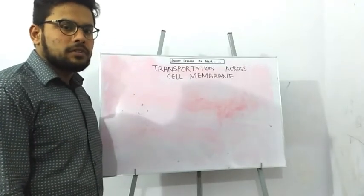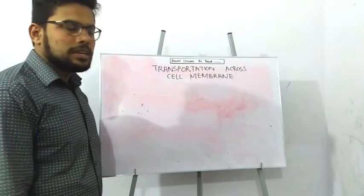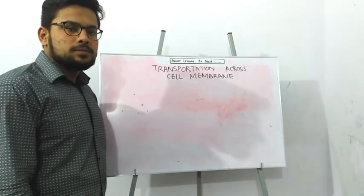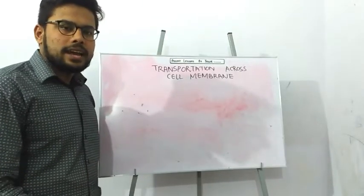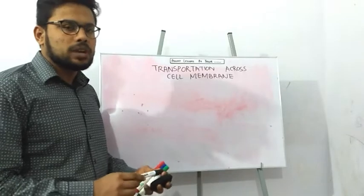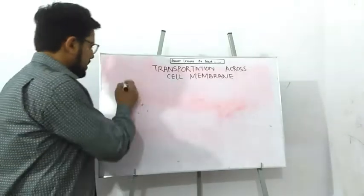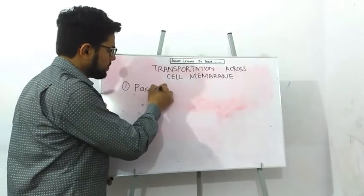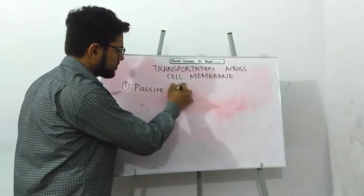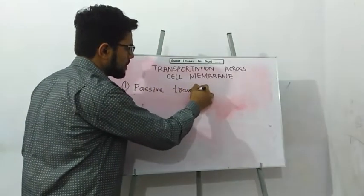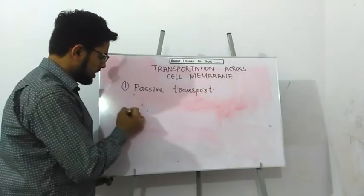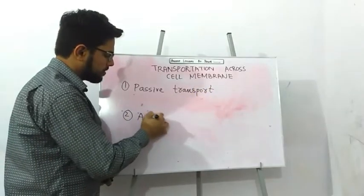Today our main topic is transportation across the cell membrane. Substances move in and out of the cell by two types of transportation system: number one is passive transport, and number two is active transport.